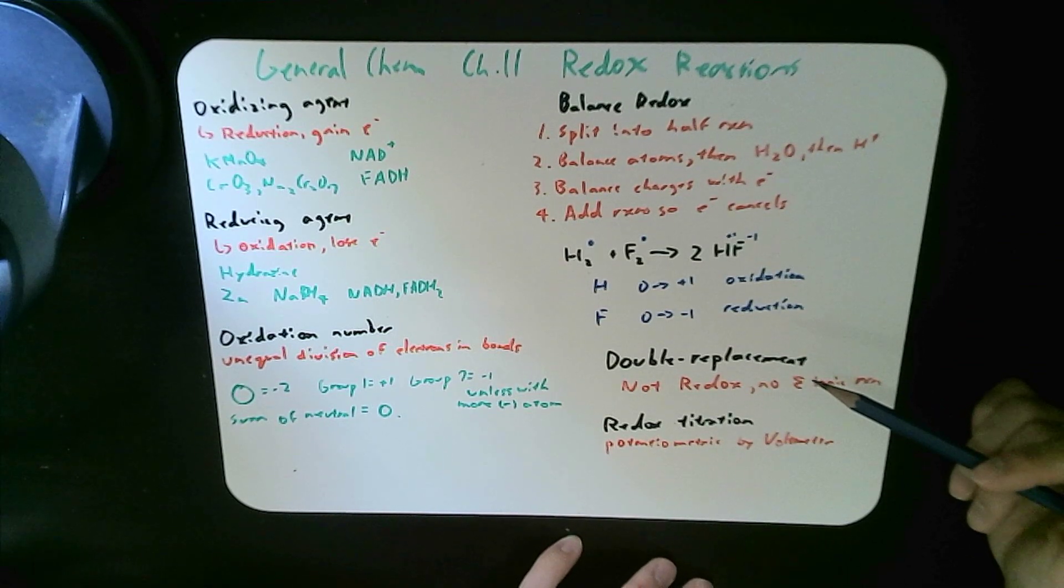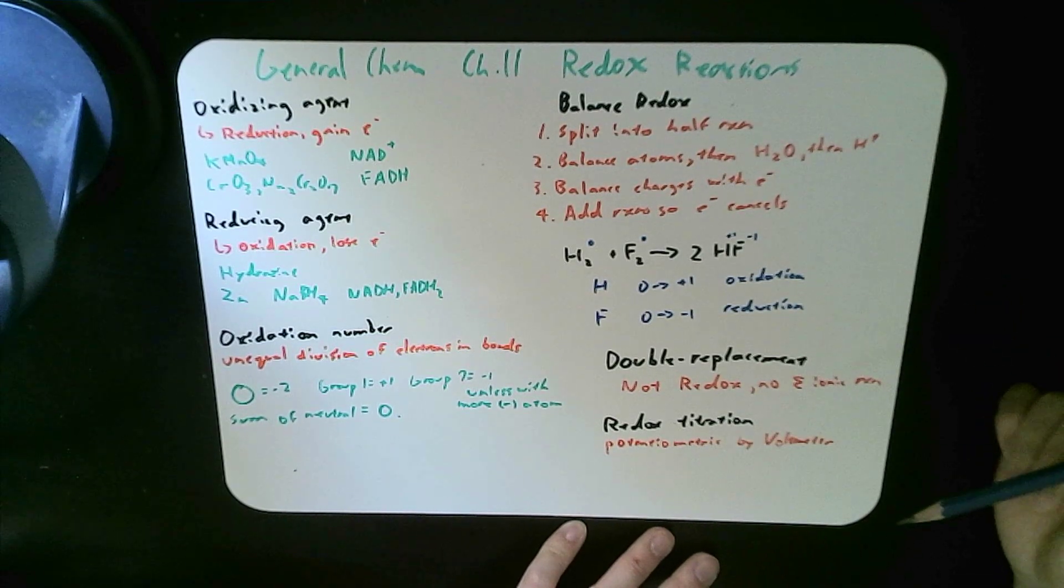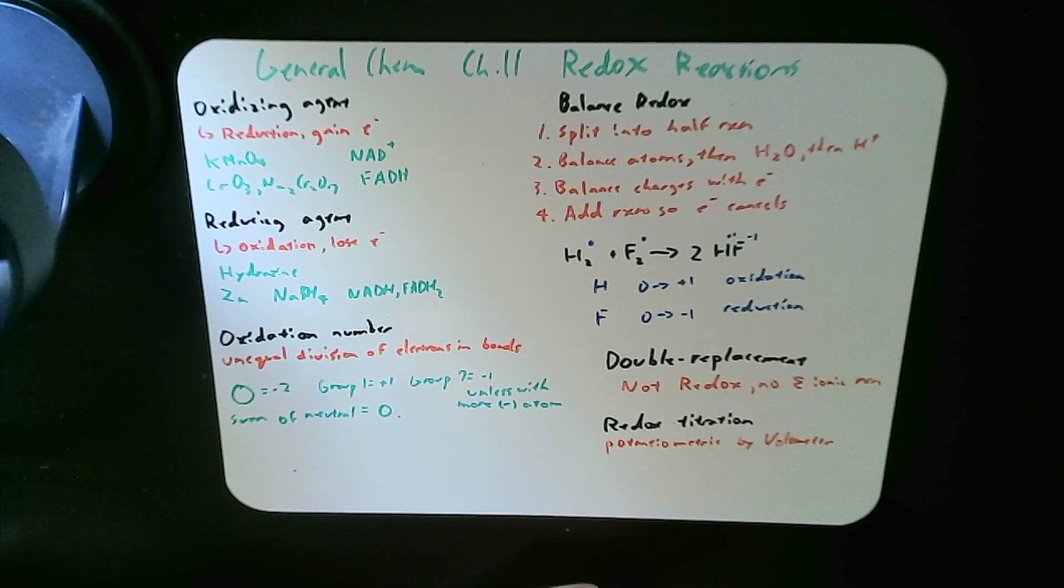Redox titration is similar to pH titration, but you're just using potentiometric, and using voltmeter to measure, instead of using pH, or the color changes. That's it.